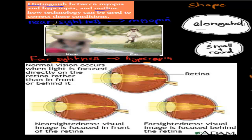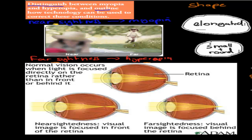Nearsightedness would be the opposite. People who are nearsighted can see clearly if things are nearby — so the close girl would be clear, not blurry — whereas for someone with myopia or nearsightedness, the far girl would be blurry. So for farsightedness, the far girl is clear and the near girl is blurry; for nearsightedness or myopia, the close girl is clear but the far girl is blurry.